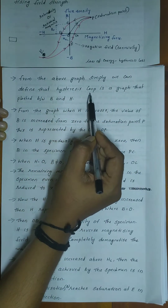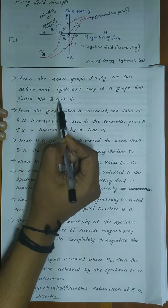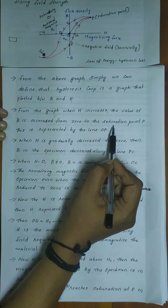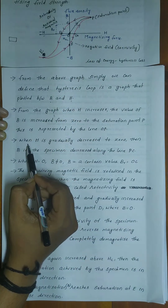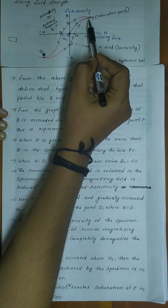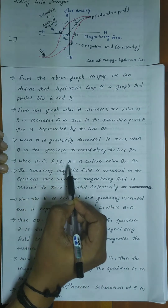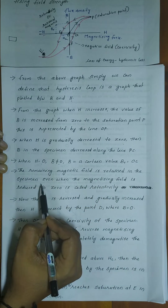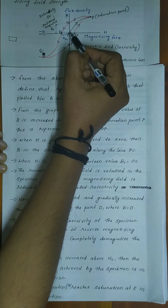Simply, the hysteresis loop is a graph plotted between B and H, where B is the magnetic field induced in the material and H is the magnetizing field. When H increases, B increases from 0 to saturation point P, represented by line OP. When H is gradually decreased to 0, B decreases along the line PC. When H equals 0, B is not zero — B equals a value BR which equals OC. This remaining magnetic field retained in the specimen when the magnetizing field is reduced to 0 is called retentivity. OC is the retentivity.